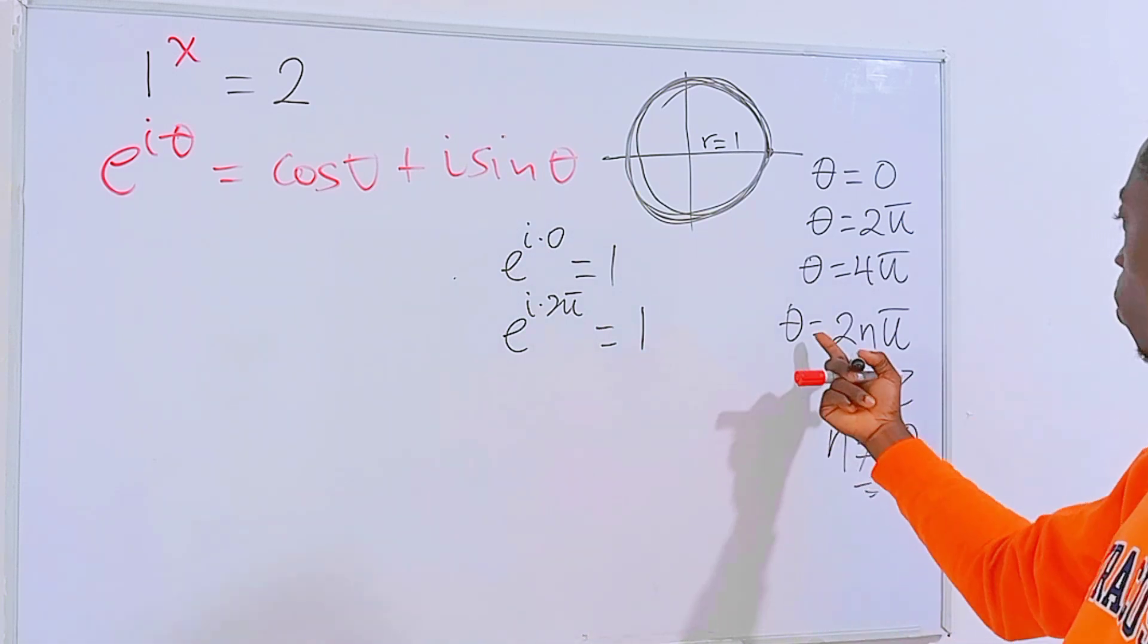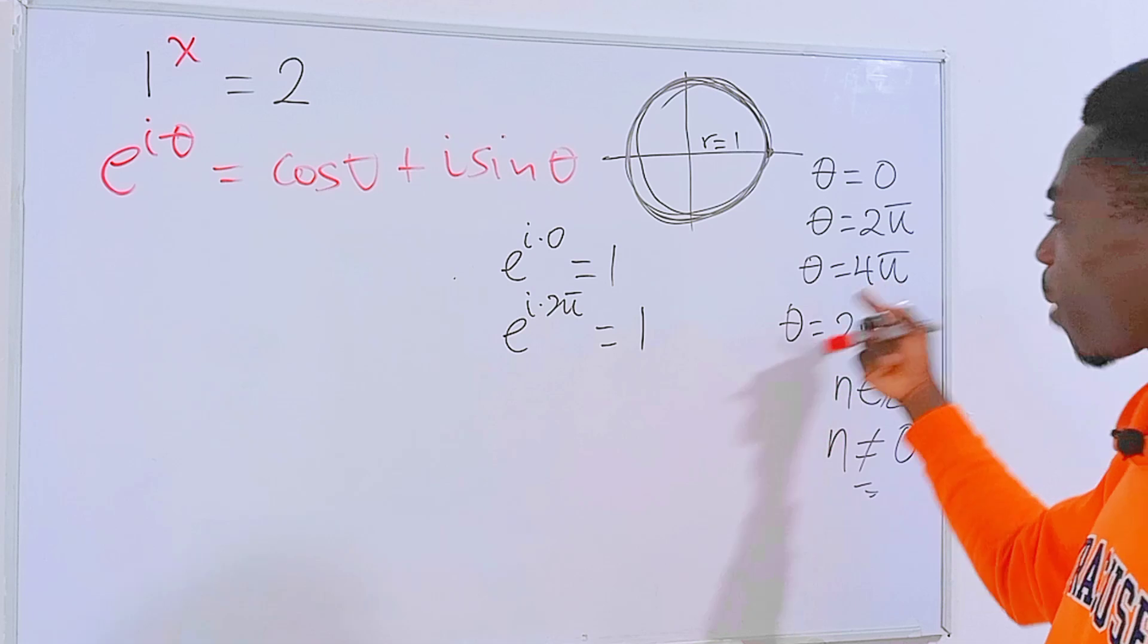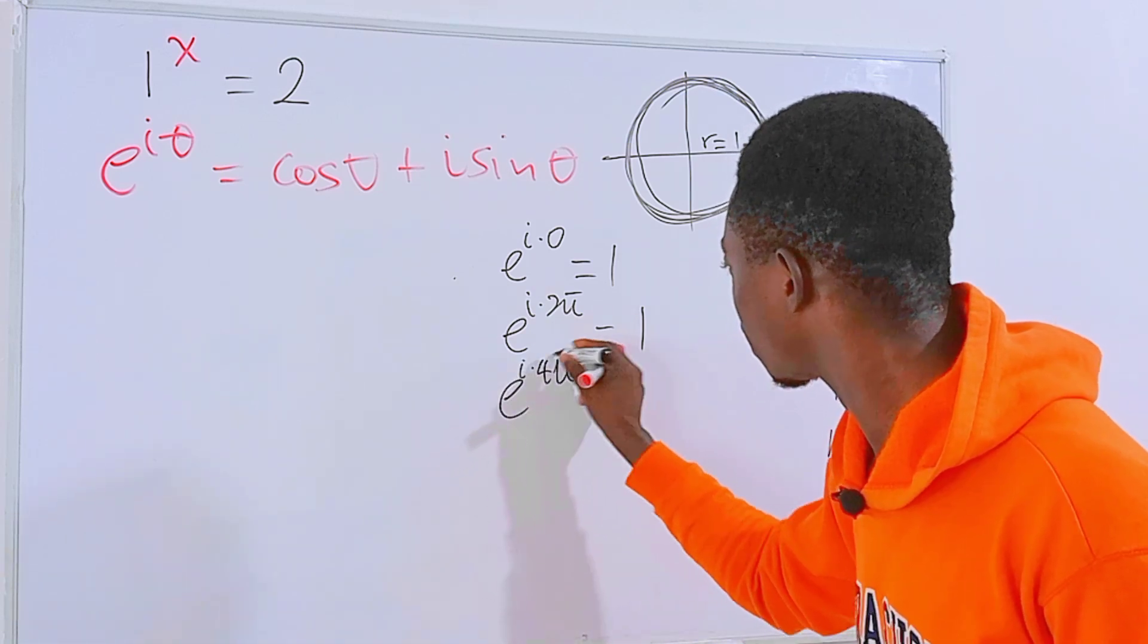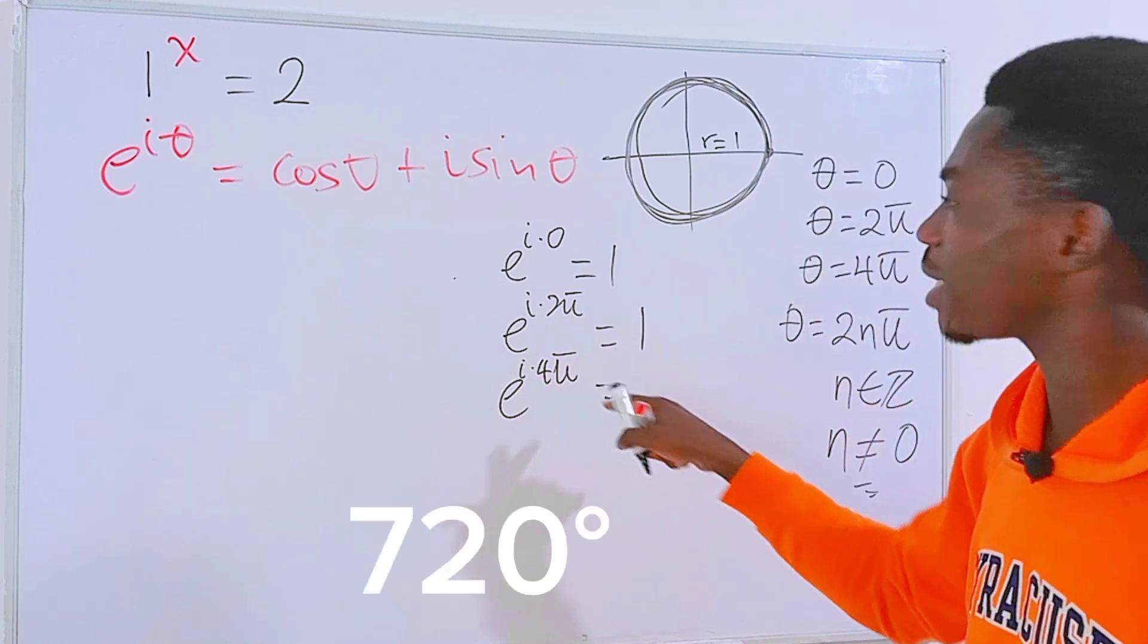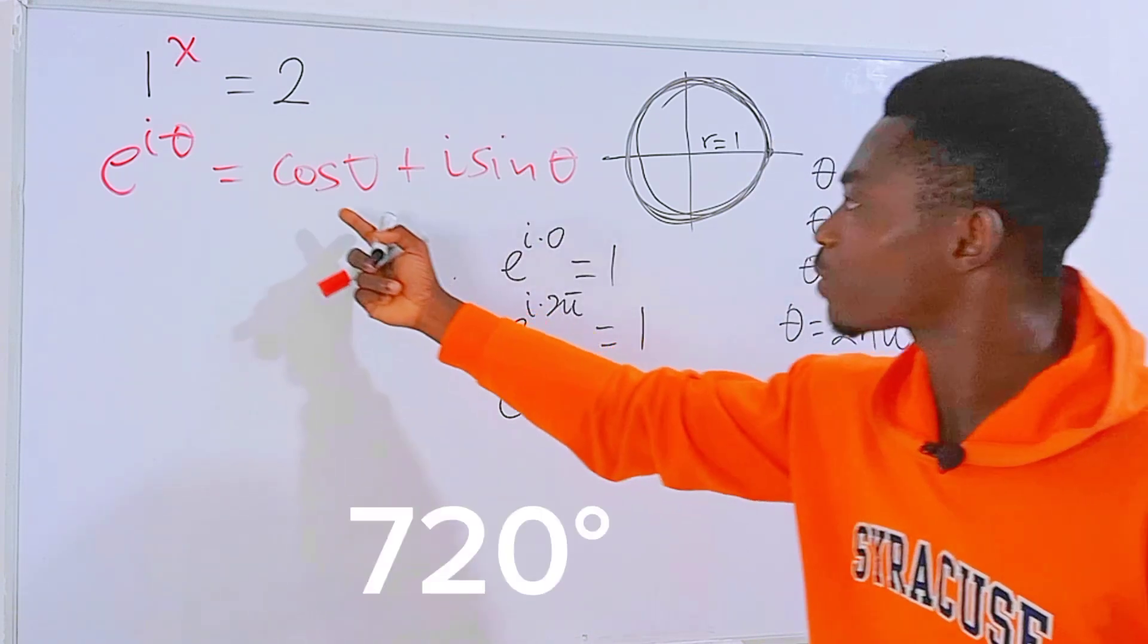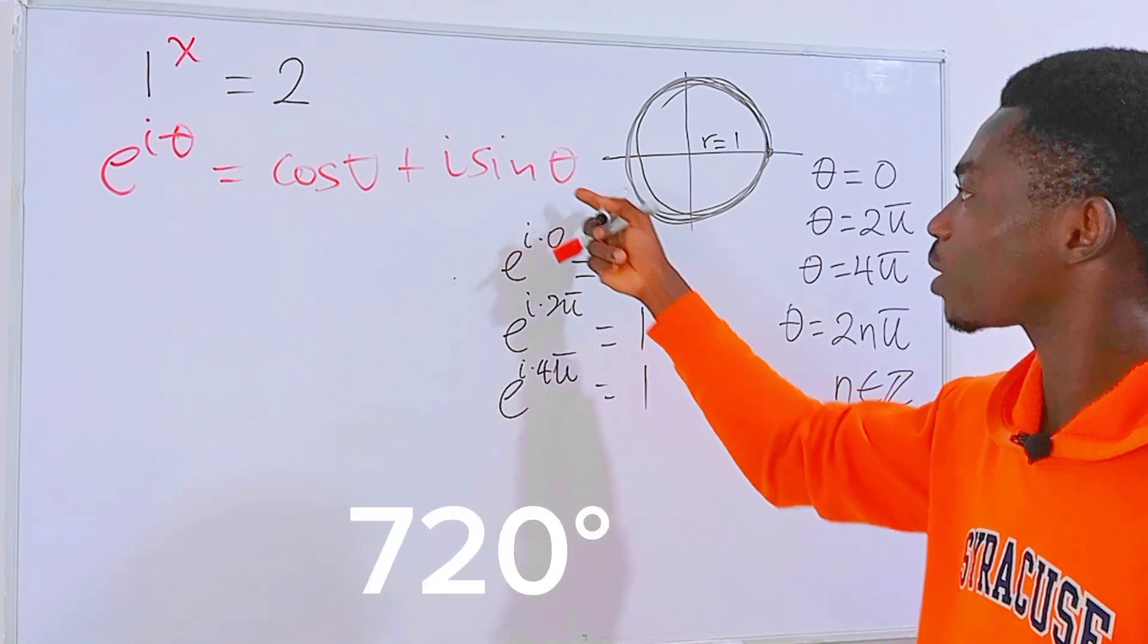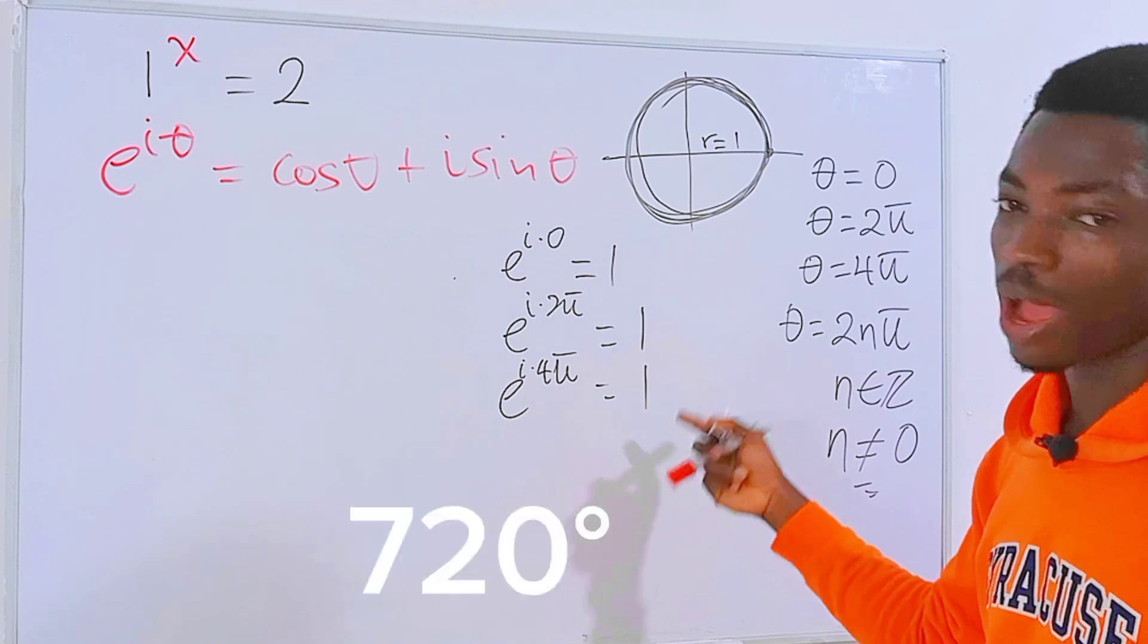In the same way, if we put theta equals 4π, we have e to the power i times 4π equals... 4π is the same as 740 degrees. Cos of 740 will be 1, and sine of 740 will be 0. So we still have this.